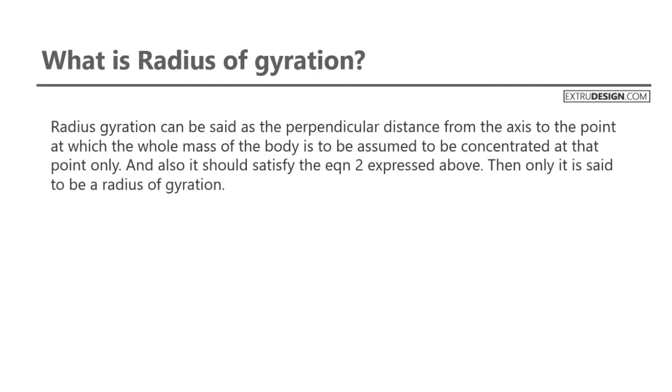Radius of gyration can be said as the perpendicular distance from the axis to the point at which the whole mass of the body is to be assumed to be concentrated at that point only, and it should satisfy equation 2 which is expressed above. Then only it is said as the radius of gyration.